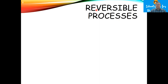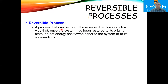A reversible process is defined as a process that can be run in the reverse direction in such a way that once the system has been restored to its original state, no net energy has flowed either to the system or to its surroundings. In other words, we can wind the clock back, turn it to its original state, and it'll look like nothing's happened. Burning wood is not a reversible process. However, things like melting ice are reversible processes, where you can take a cube of ice, add some heat so it becomes a liquid, but if you take that same amount of heat back, it turns back into ice.